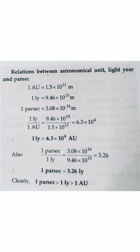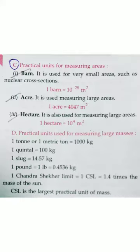Here the relationship between astronomical unit, light year, and parsec is given. One astronomical unit is 1.5 into 10 to the power 11 meters, and one light year is also given. From this relation we find that parsec is the largest unit for measuring large distances, followed by light year, and then astronomical unit. Third, we talk about practical units for measuring area.